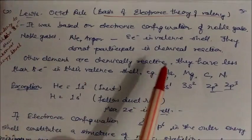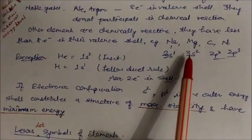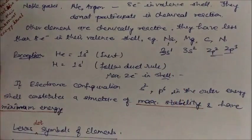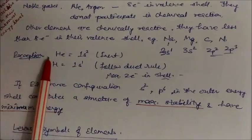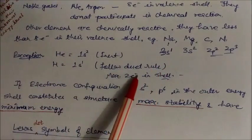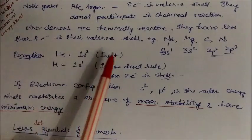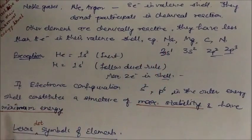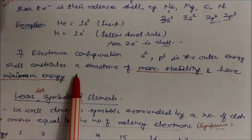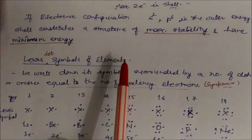Other elements are chemically reactive because they have less than eight electrons in their valence shell. For example: sodium has configuration 3s1, magnesium has 3s2, carbon has 2p2, nitrogen has 2p3 — all chemically reactive. Helium is an exception with 1s2 and is inert; hydrogen has 1s1 and is reactive, following the duet rule. If the electronic configuration in the outermost energy shell is s2p6, it constitutes maximum stability with minimum energy. Elements with less than eight electrons are chemically reactive.